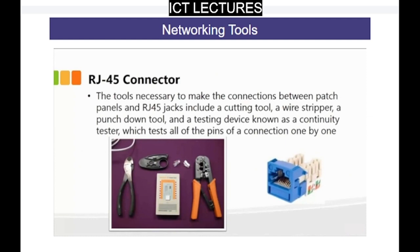The tools required to make RJ45 connections or connections between the patch panel and the RJ45 jacks include a cutting tool, wire stripper, punch-down tool, and a continuity tester, which tests all of the pins of the connection one by one. Since there are eight pins, once you make the cable using the crimper tool, you can plug it into the device and it will test each pin for active electrical connection.